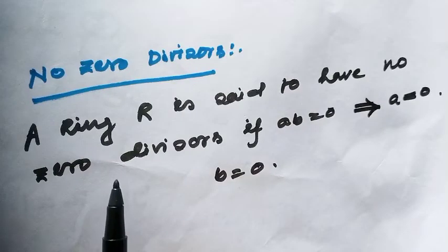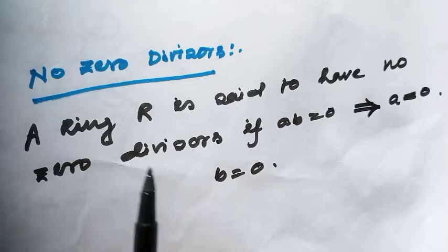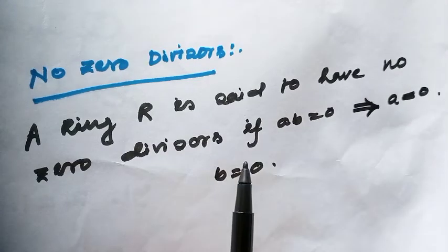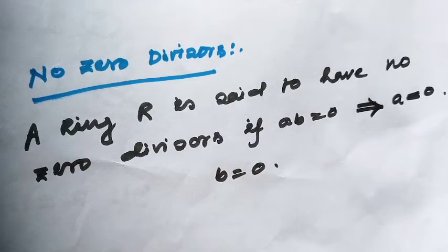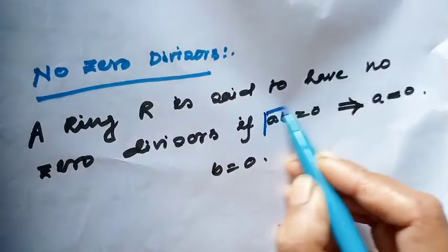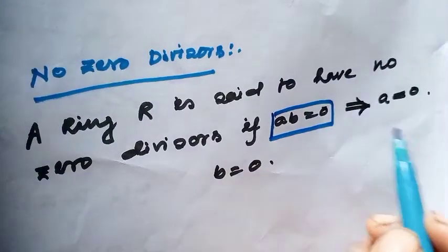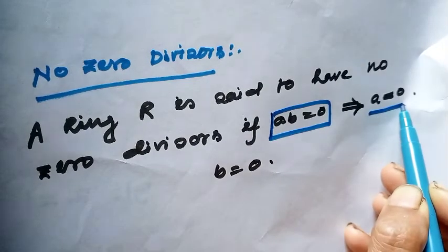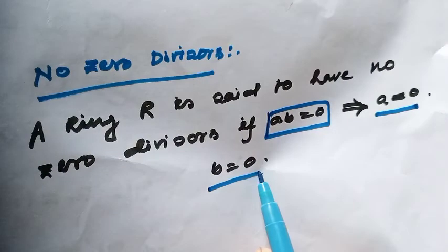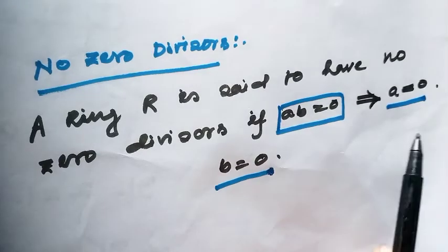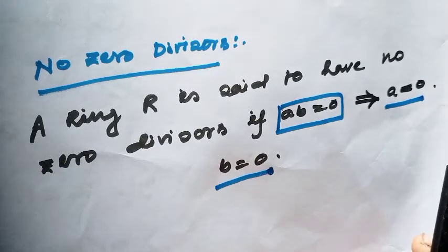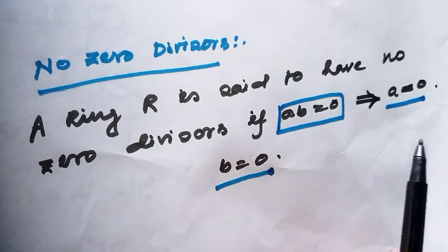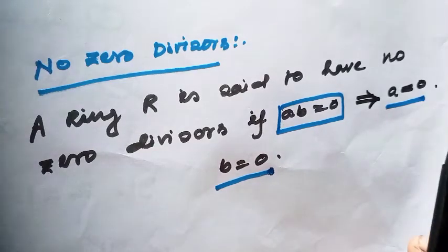Now I will introduce the concept of a ring with no zero divisors. A ring R is said to have no zero divisors if a·b = 0 implies either a = 0 or b = 0. In the definition of a zero divisor, both a and b are non-zero elements, but here either a or b must be the zero element.